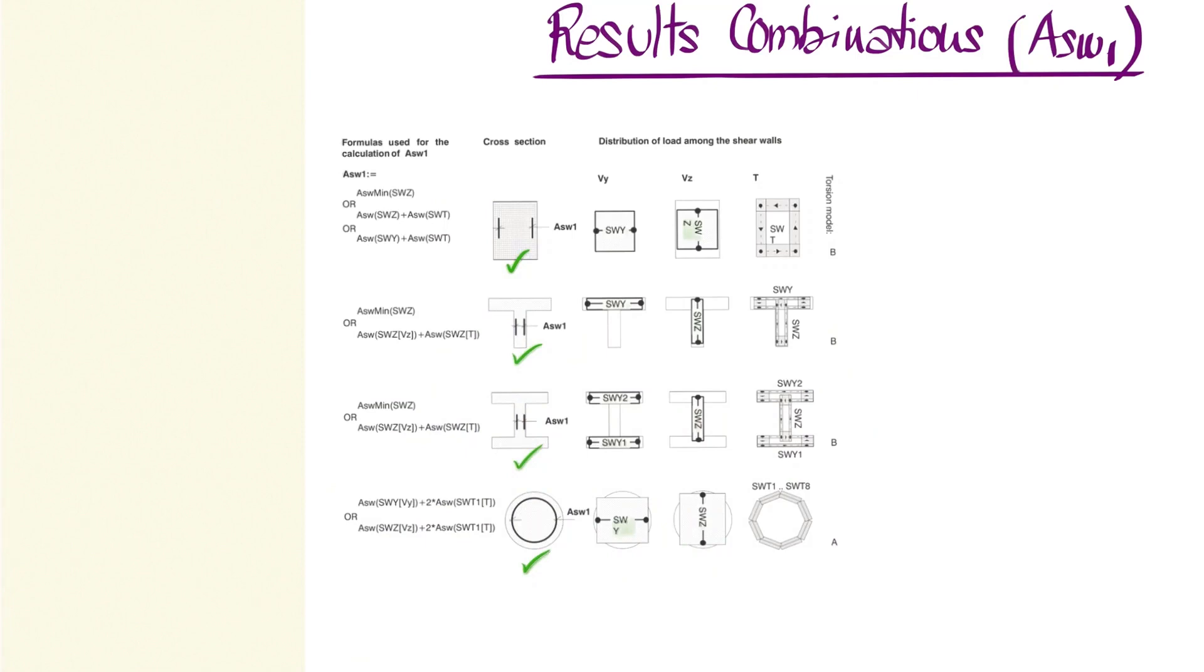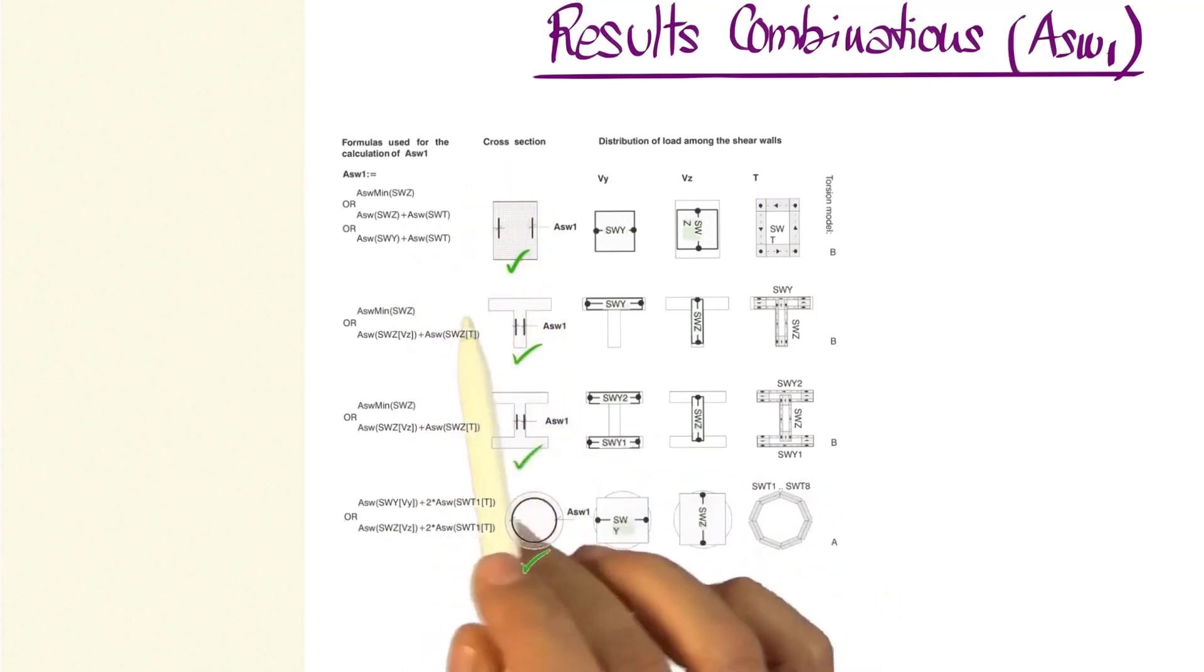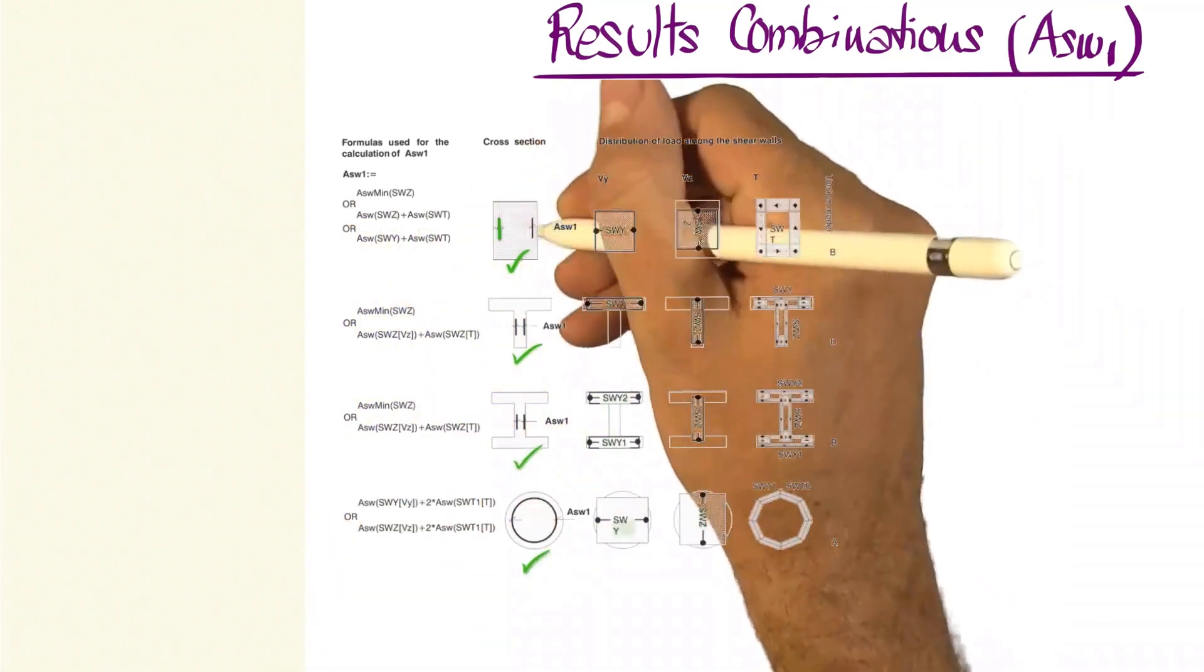Let's briefly explain what this means and how it can be modified. For example, in a rectangular cross section, what is the reinforcement we need in our stirrup? Here we see that the program will provide the reinforcement for this stirrup.